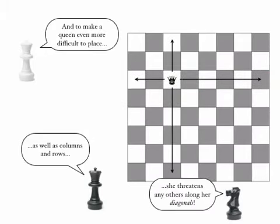Now, in addition to the columns and rows, just to make things even more difficult, a queen also threatens and is threatened by the two diagonals. So I can't place another queen in either of these locations.